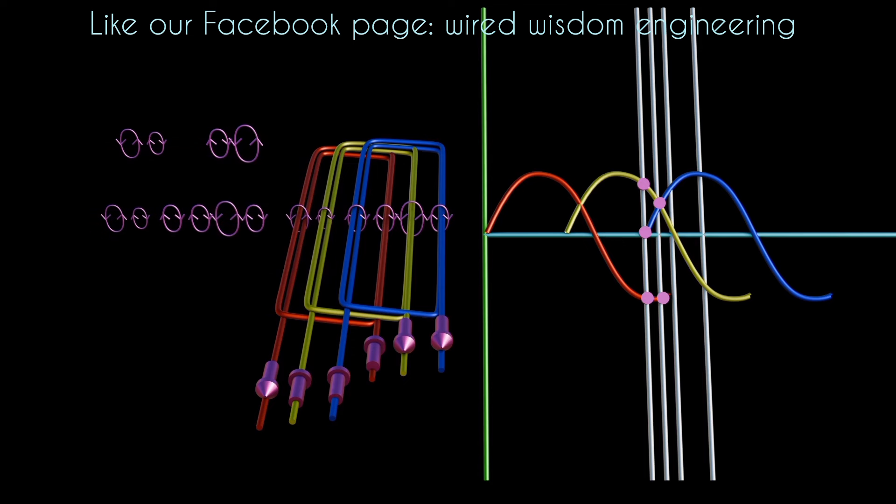Next, the red phase is still on the negative half cycle, yellow phase has gone to zero, and blue phase is on the positive. Also, let's freeze this scenario's magnetic field.